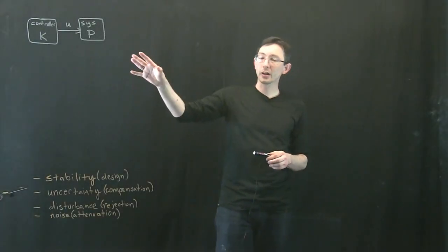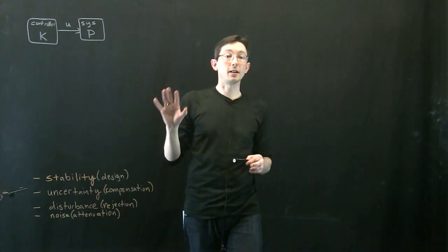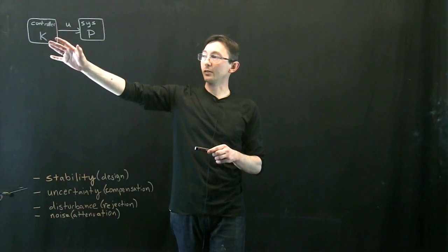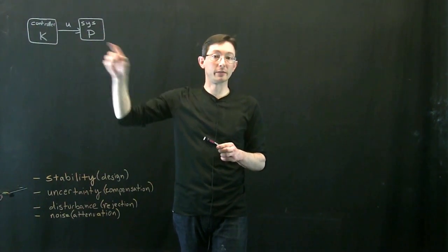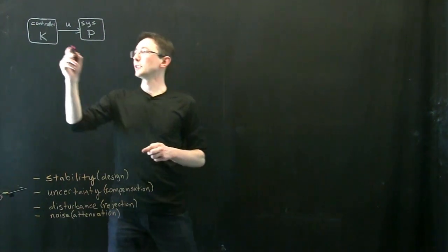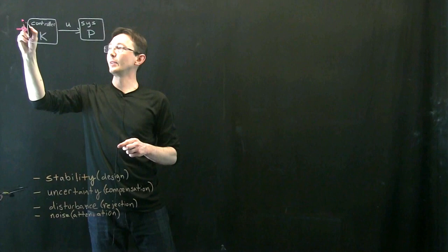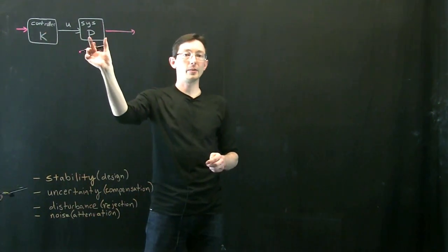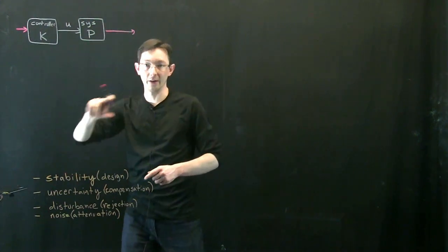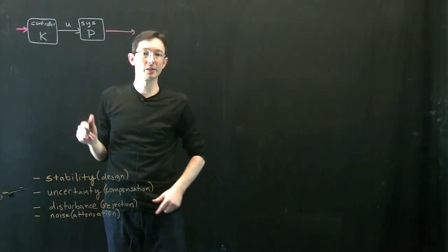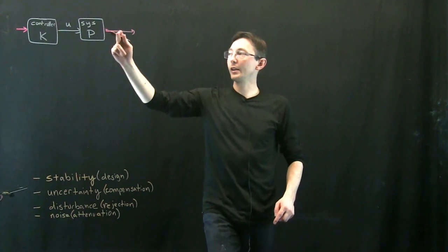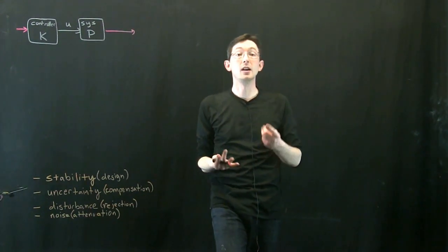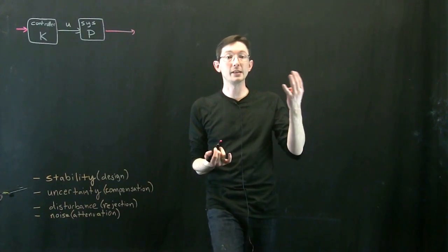Welcome back. We're going to be talking about one of the most important concepts useful for robust control. In particular, we're going to be talking about the loop transfer function — the transfer function that includes just the controller and the plant in open loop without any feedback. The various properties of this transfer function are extremely important to quantify performance and robustness.